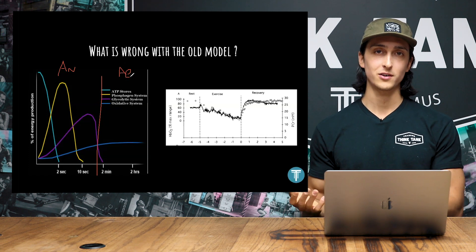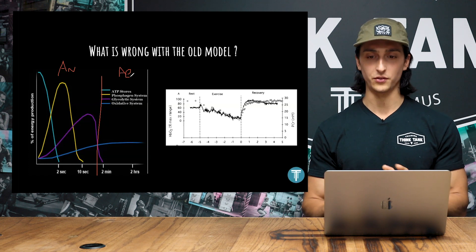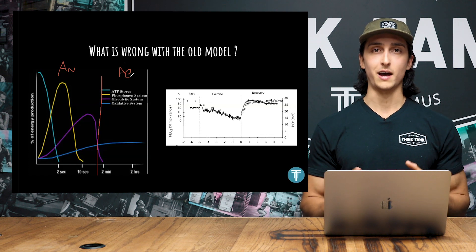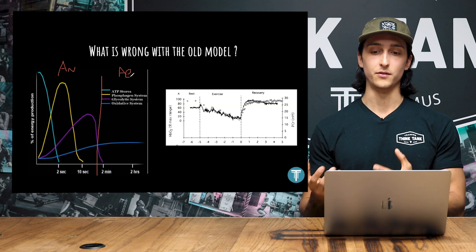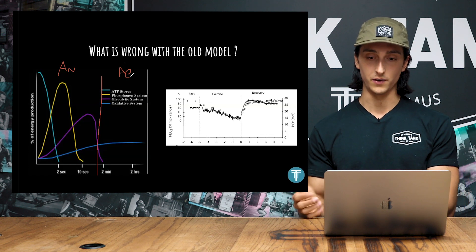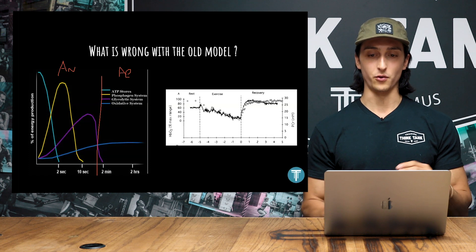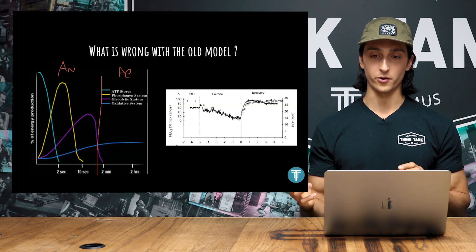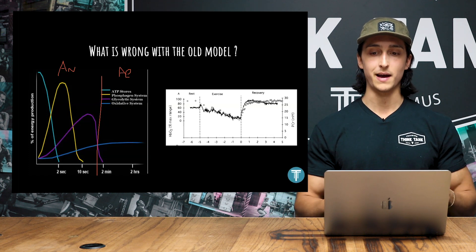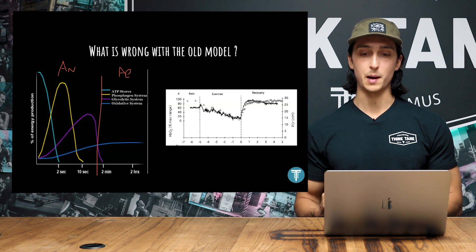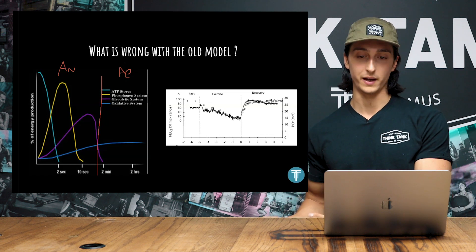Which they say occur in the absence of oxygen. And we'll get into why that's not necessarily the case. And the latter is categorized as the oxidative system, meaning oxygen is needed for its function. So this model proposes that these aerobic and these anaerobic processes are going to occur independent of one another. And that's to say, at any given point, we're either operating aerobically or we're operating anaerobically.